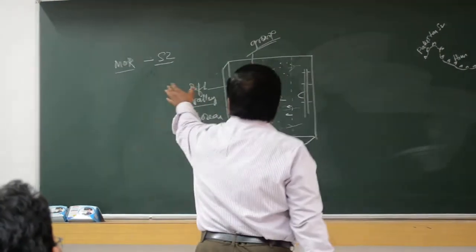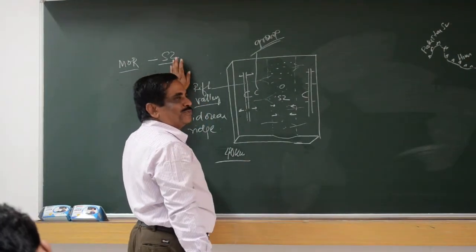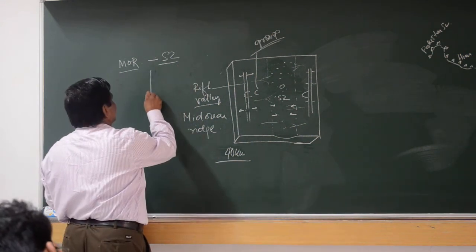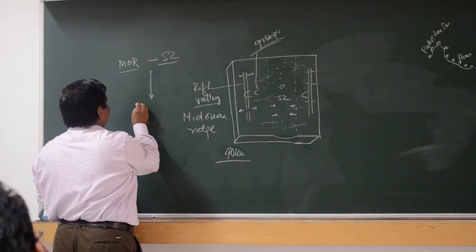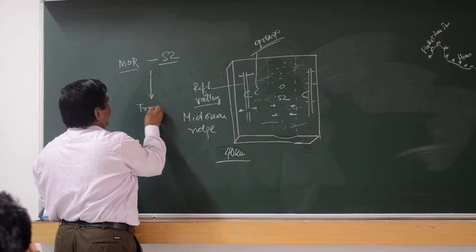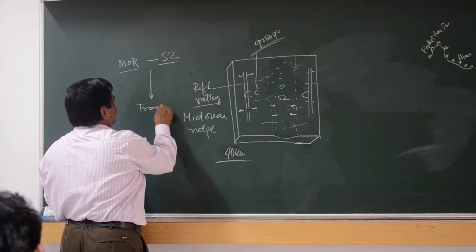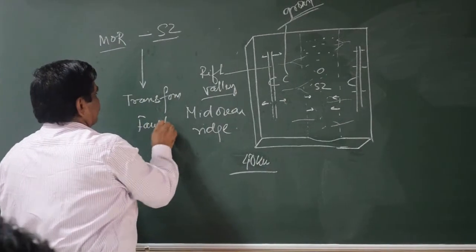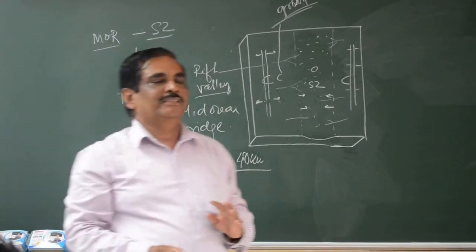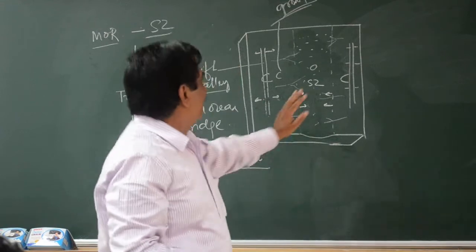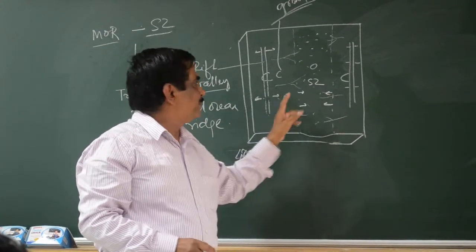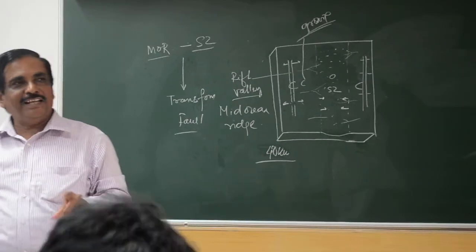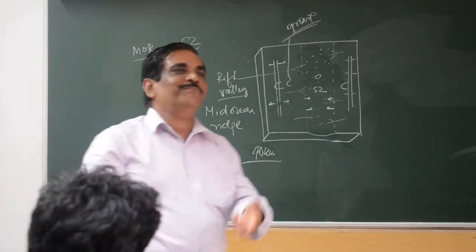So these are the two elements: mid-oceanic ridge and subduction zone. There is one more element left in this process — that is the transform fault. Just like when you are closing your ocean, this side is opening up automatically. You have to open it. Similarly, automatically the transform fault will be created.